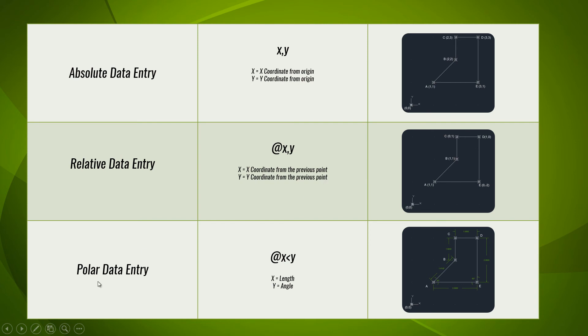The last one is the polar data entry method. Polar data entry method is very easy and simple — you have to input the length of the object and the angle, or in other words, the distance and the angle.